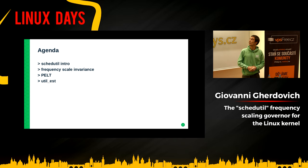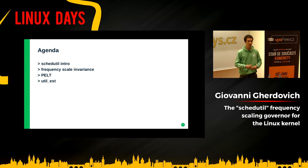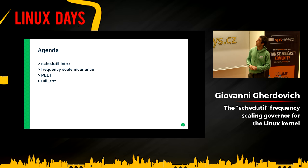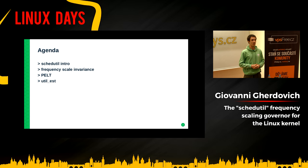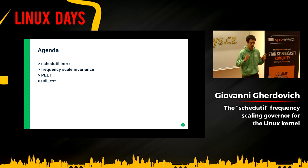Then I will recall what the PELT mechanism is. PELT stands for Per Entity Load Tracking, and it's a feature of the Linux Scheduler. It was invented in 2012, and it's an improved way to gauge the activity of a system. And then describe UTILEST, which stands for Utilization Estimation, and it is an optimization to the PELT signal in order to better serve the Schedutil frequency governor. Lots of names.